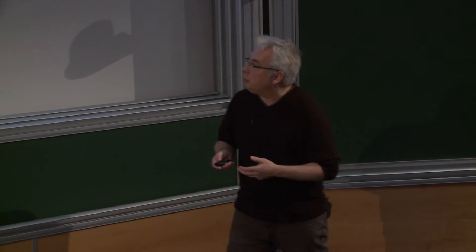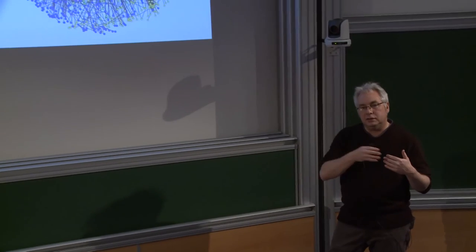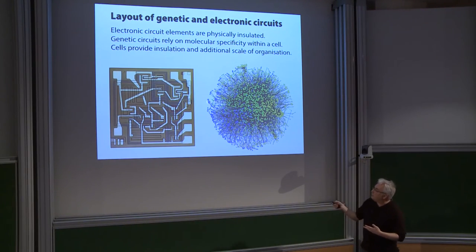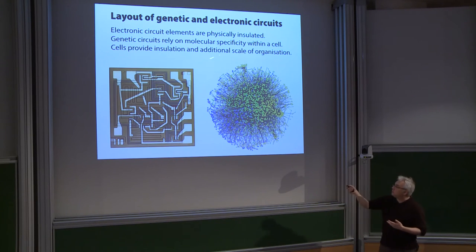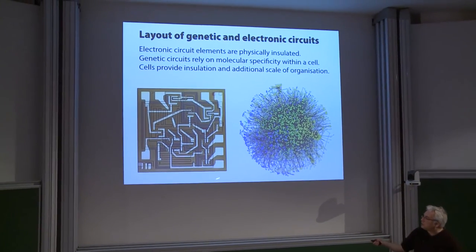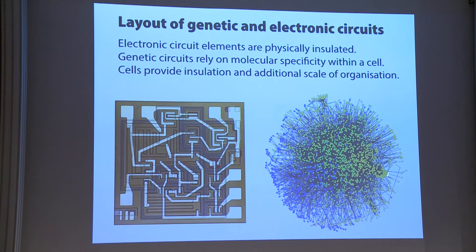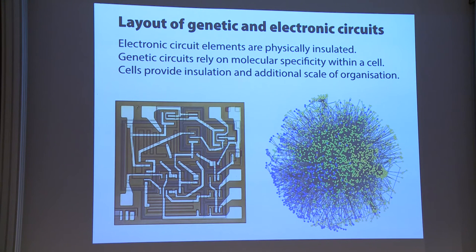The superficial similarities between semiconductor assemblies and biological systems breaks down very quickly. Electronic circuits have insulation and a top-down design process, whereas in biological systems—whether at the genetic, cellular, or population scale—you have networks of interacting elements that are often not insulated. Inside a cell, all components have access to all other components, requiring molecular specificity to separate elements from each other. An electronic circuit can have identical elements simply wired differently, but in the biological context you need a different element for each logic component.